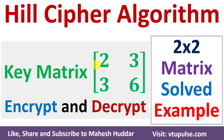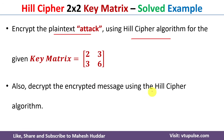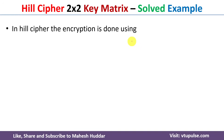Welcome back. In this video I will discuss how to encrypt the given plaintext and how to decrypt the ciphertext using the Hill Cipher algorithm with a 2x2 key matrix. We need to encrypt the plaintext 'attack' using the Hill Cipher algorithm. The key matrix is given to us. The encryption formula is: ciphertext C is equivalent to K multiplied by P mod 26, where K is the key matrix and P is the plaintext.